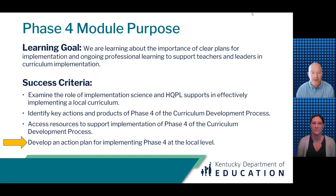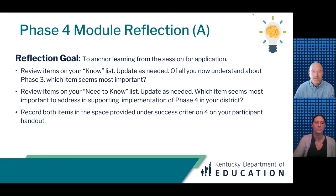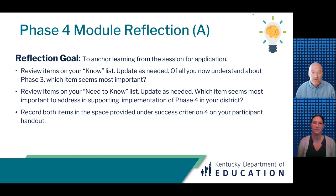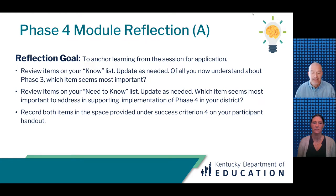We've arrived at our last success criterion: develop an action plan for implementing Phase 4 at the local level. Before thinking through your action plan, let's pause for a final reflection. Go back to your Know, Need to Know table on page one of your participant handout. Review the items on your Know list and update as needed—which item seems most important for you to remember? Then review your Need to Know list, determine which item seems most important to address in supporting implementation of Phase 4, and record both items under Success Criterion 4 on your Participant Handout. Pause the video and restart after completing this portion of the final reflection.